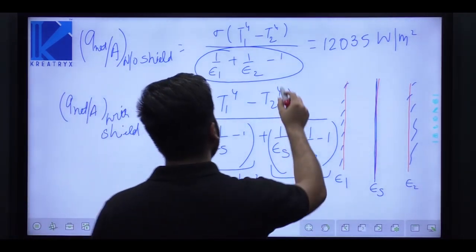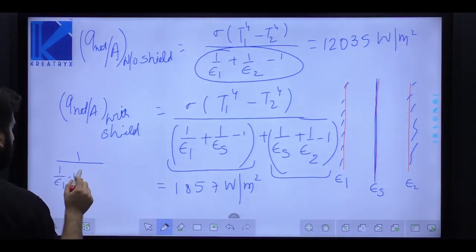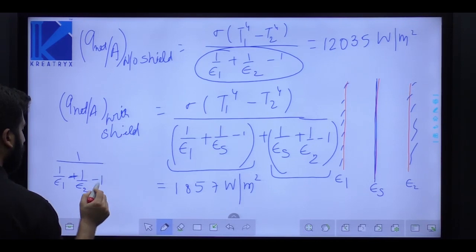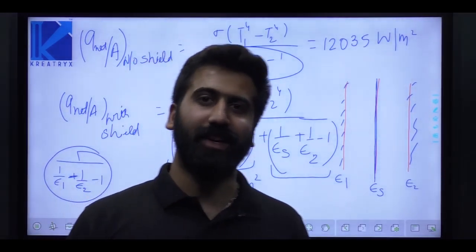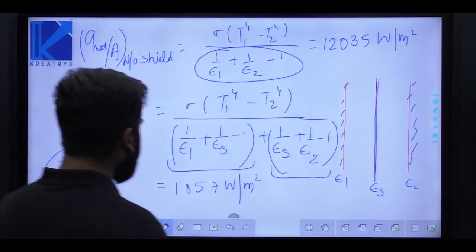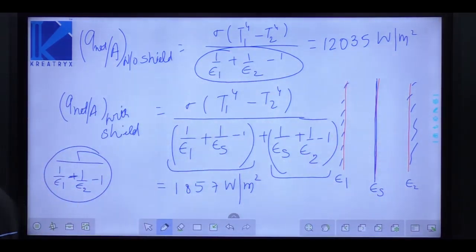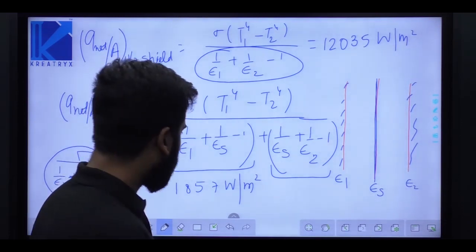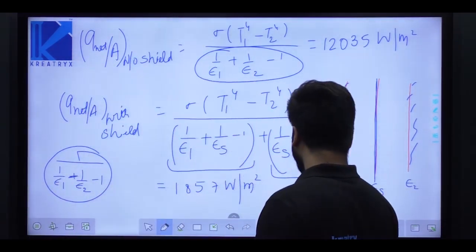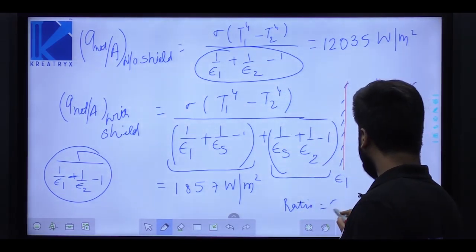The denominator (1/epsilon1 + 1/epsilon2 - 1) is the equivalent emissivity for this system. Taking the ratio of Q without shield to Q with shield gives the answer: 12,035 / 1,857 = 6.48. So the ratio is 6.48.